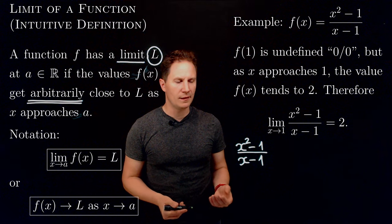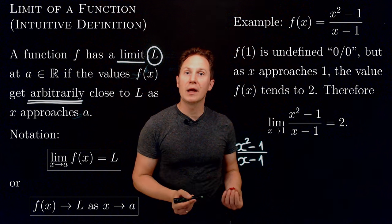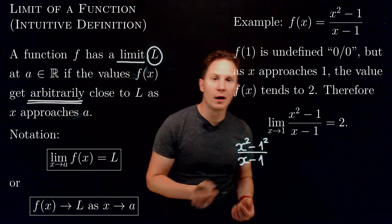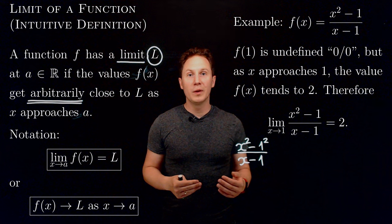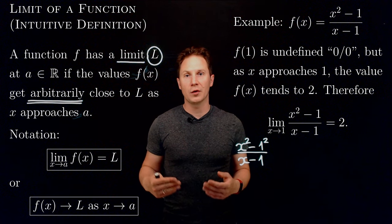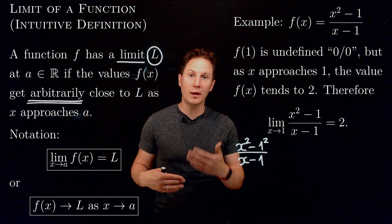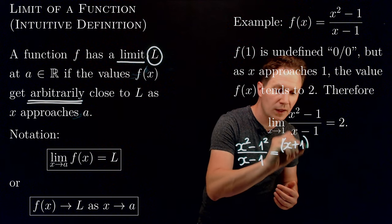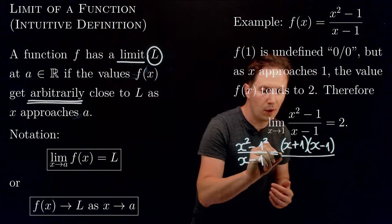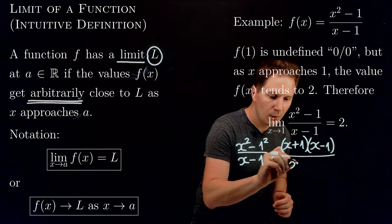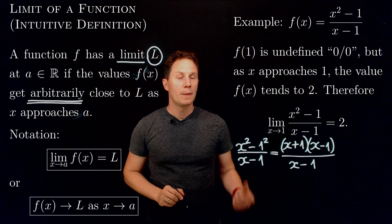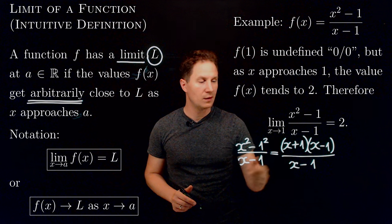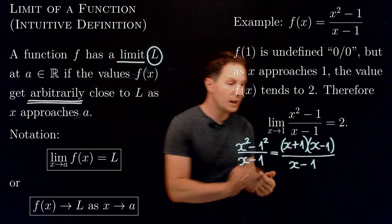In this fraction, the numerator contains a difference of squares: x² - 1. It is of the form a² - b², which we can factorize into (a + b)(a - b). That lets us write the numerator as (x + 1)(x - 1), leaving the denominator as (x - 1). We then notice the shared common factor of (x - 1) between numerator and denominator, so we can cancel it.